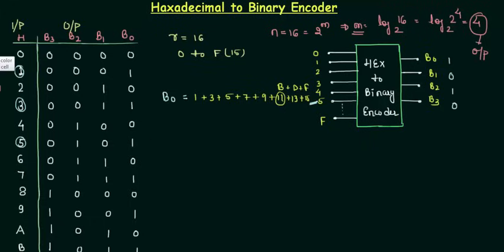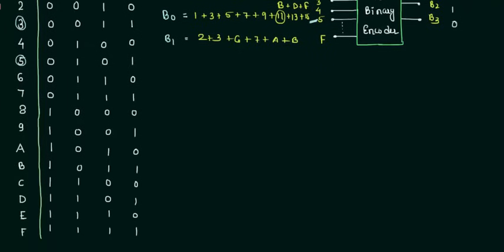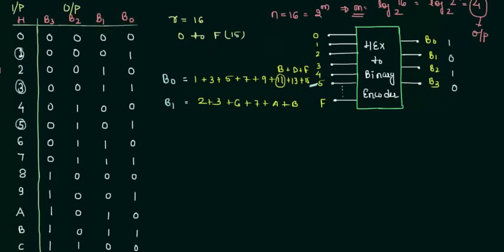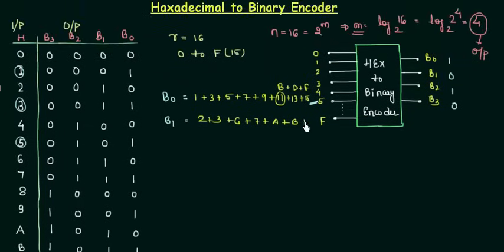Let's see for B1 and B1 is high for 2, 3. Let's write it down 2 or 3. Then 6, 7, 6 or 7. Then A, B, A or B and finally for E, F. So or E, or F.